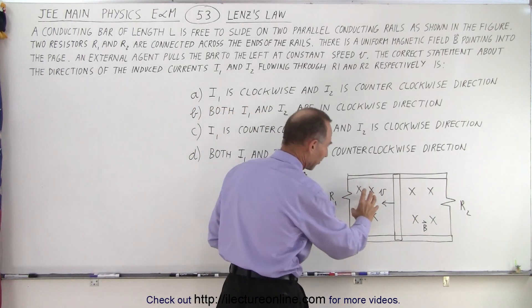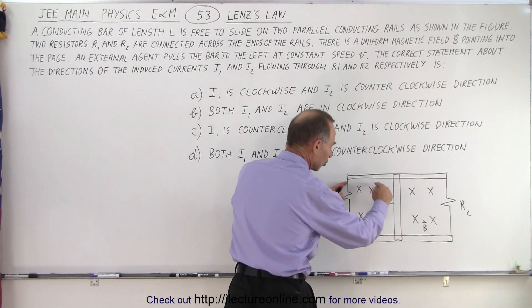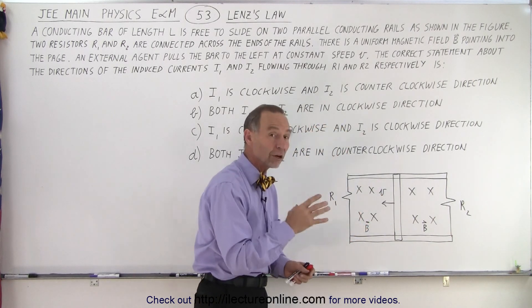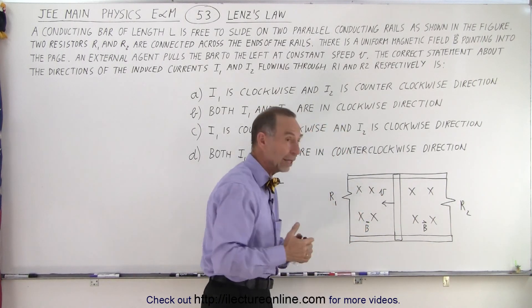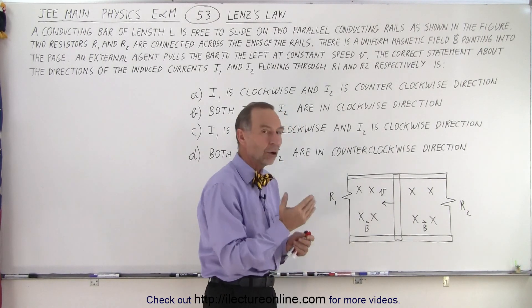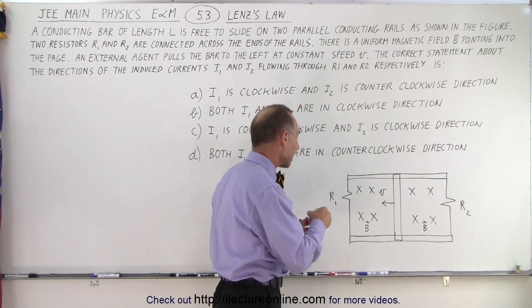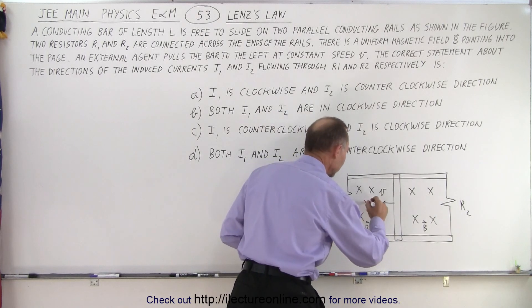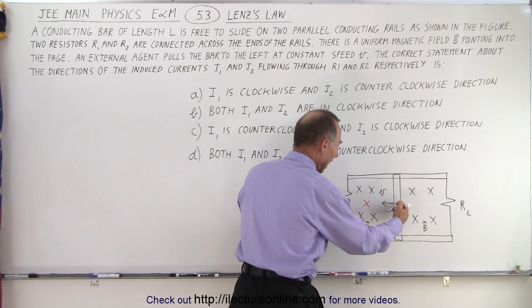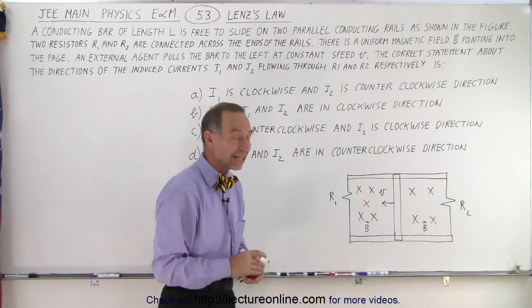Notice if we look on the left side, the magnetic field is pointing into the board. As the bar is sliding to the left, we're changing the area, we're making it smaller, so we're reducing the flux, the magnetic flux through the loop. And Lenz's Law says that an induced magnetic field will be formed to oppose the change. So it's being reduced, we're trying to keep it from reducing, so we're going to add more flux into the same direction. So an induced magnetic field in the same direction will be induced as this bar slides to the left to try and keep the flux from decreasing.